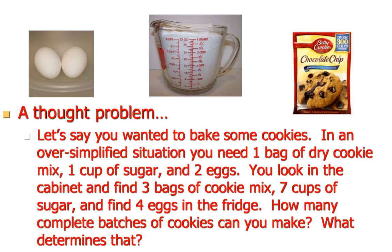Let's say you wanted to bake some cookies. In an over-simplified situation, you need 1 bag of dry cookie mix, 1 cup of sugar, and 2 eggs. You look in the cabinet and find 3 bags of cookie mix, 7 cups of sugar, and 4 eggs in the fridge. How many complete batches of cookies can you make? I'll give you a moment to think about it, so you should actually pause your video at this point.